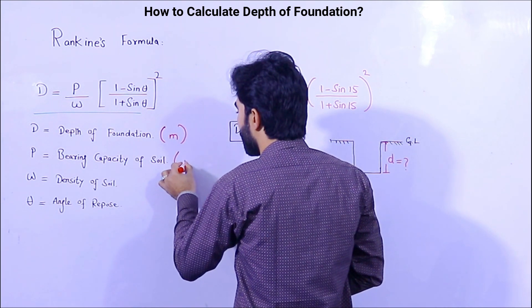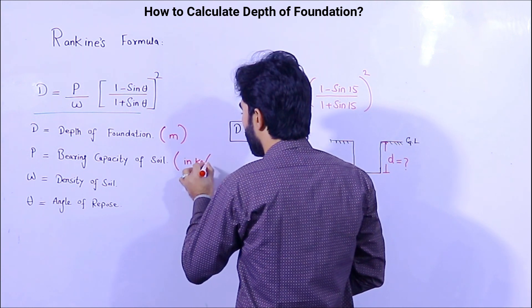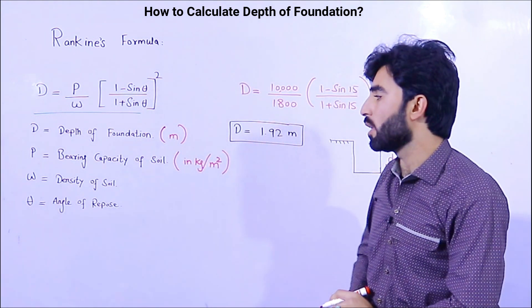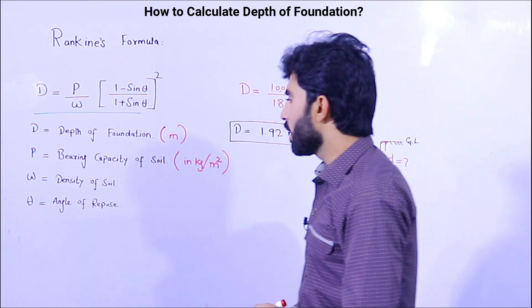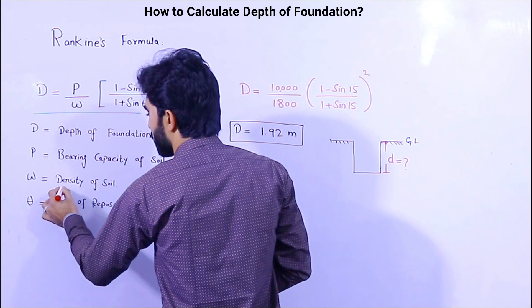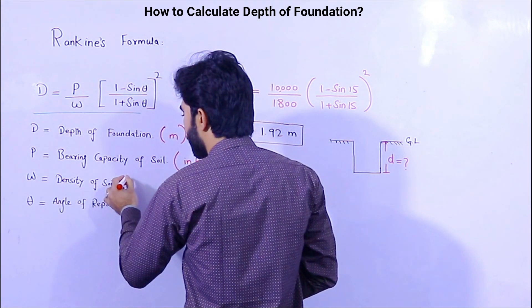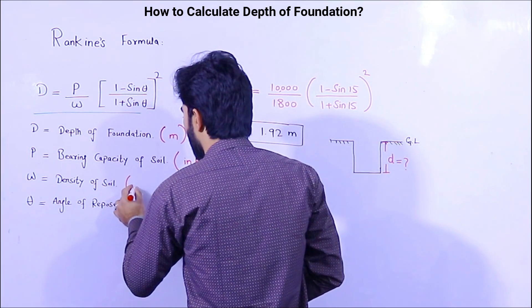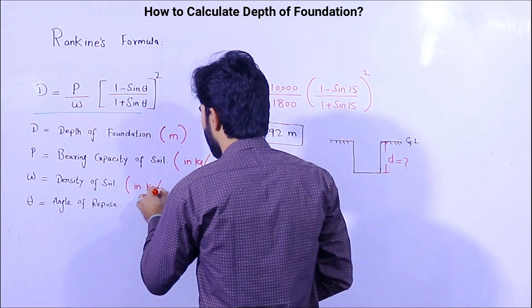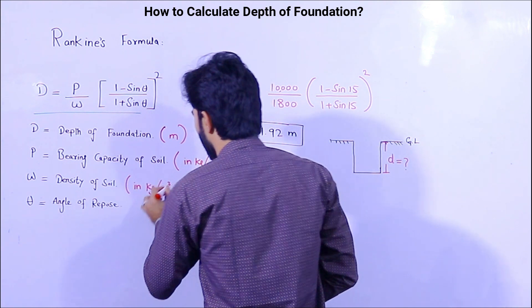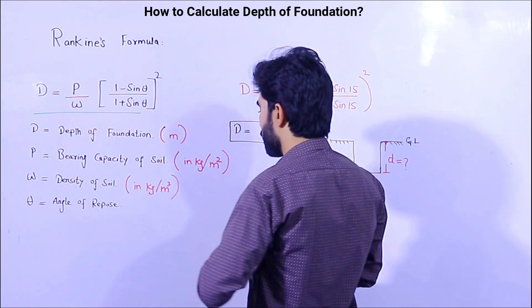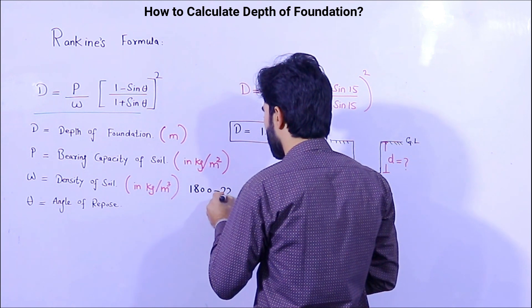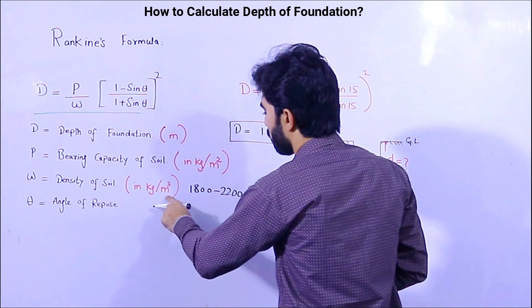The bearing capacity of soil is in kg per meter square. For different soils we have different bearing capacities. The next variable is w, which means density of soil — also called unit weight of soil — in kg per meter cube. The density of soil typically ranges from 1800 to 2200 kg per meter cube.